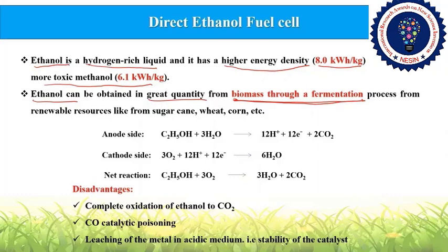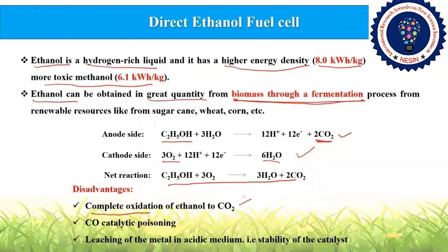The reactions at the anode and cathode in the ethanol fuel cell show ethanol oxidized to CO₂ at the anode and oxygen reduced to water at the cathode. The main disadvantage is incomplete oxidation: if ethanol is not completely oxidized, it produces CO, which poisons the platinum catalyst, decreasing both activity and stability.